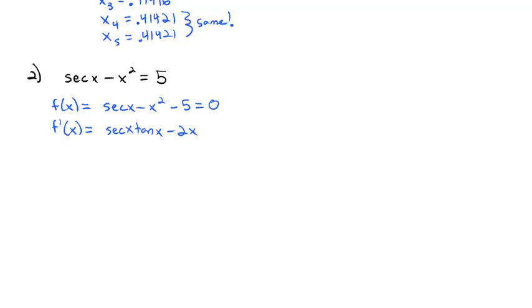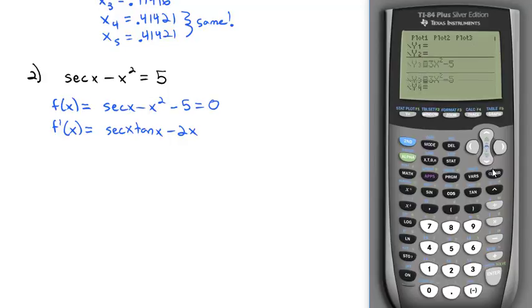So we're ready to go to our calculator. First let's clear out all the old functions. But just to get an idea of where it's going, in y2 we're going to type in the function, the original function, which is secant x. Now the calculator can't do secant x, but it can do 1 divided by the cosine of x, because secant is the reciprocal of cosine, minus x squared minus 5.